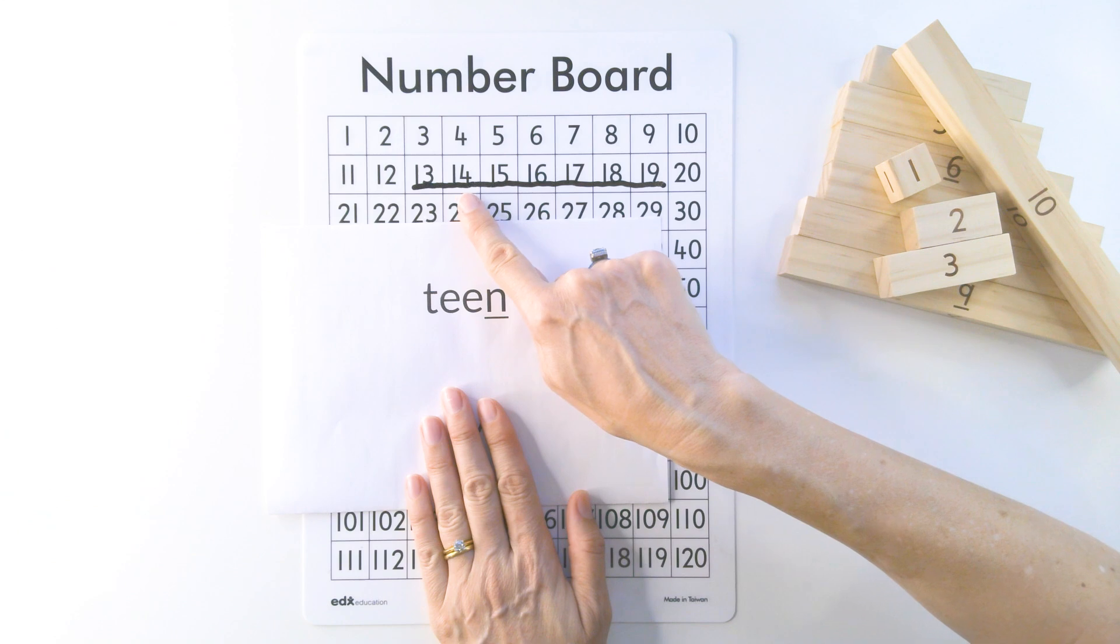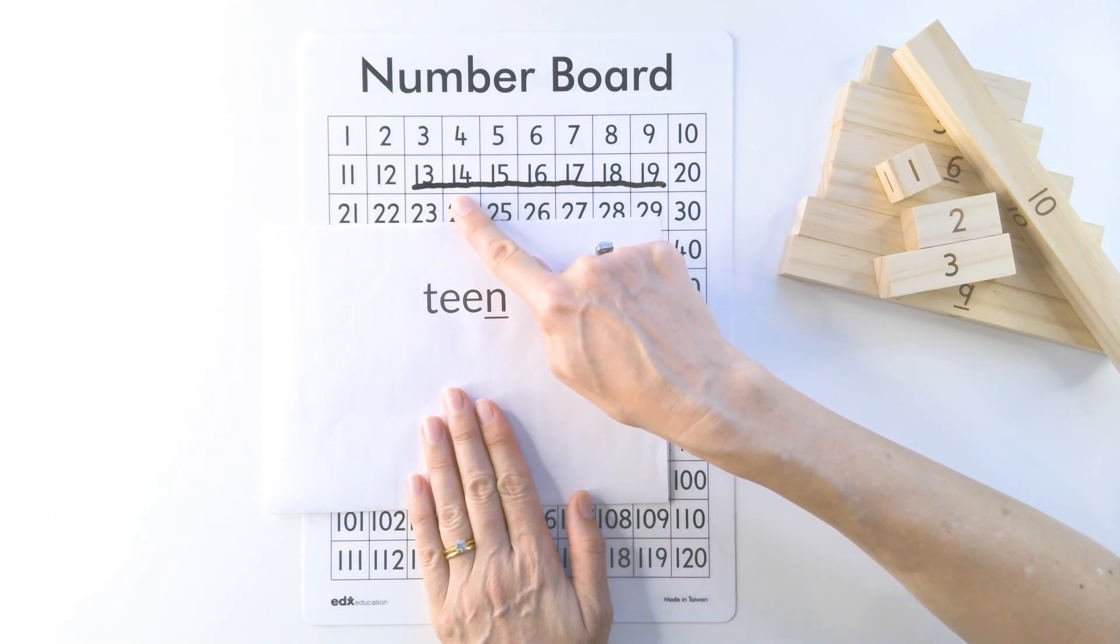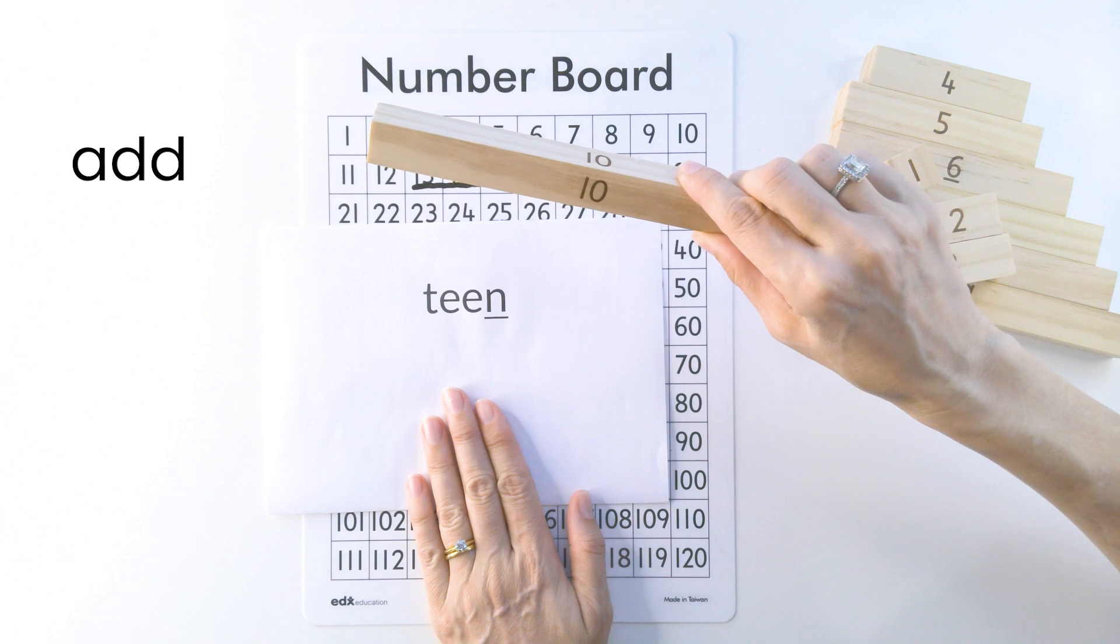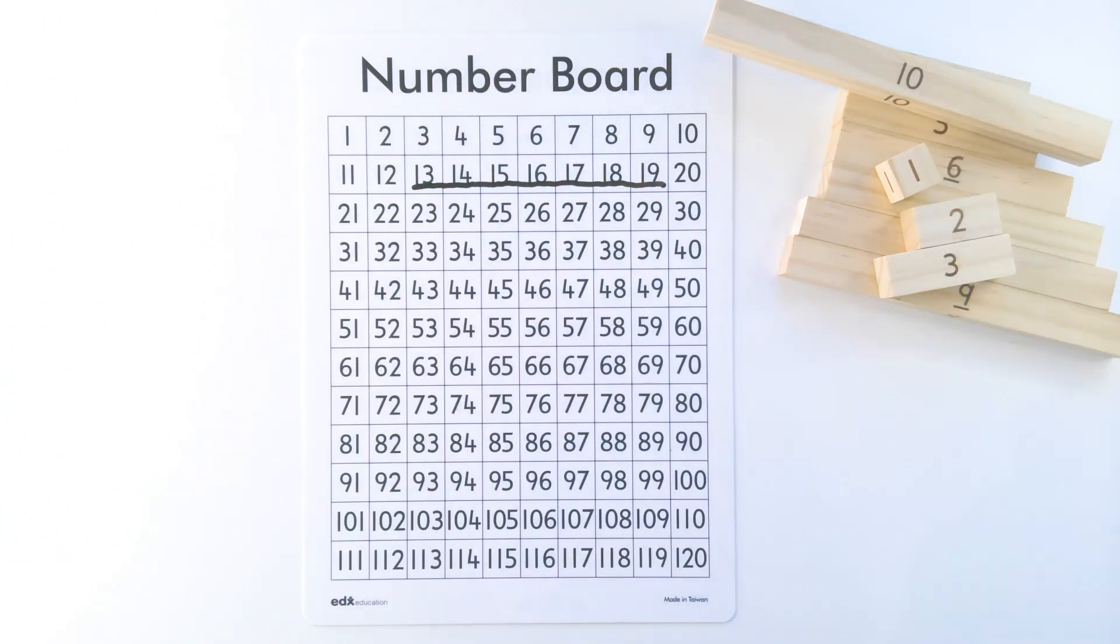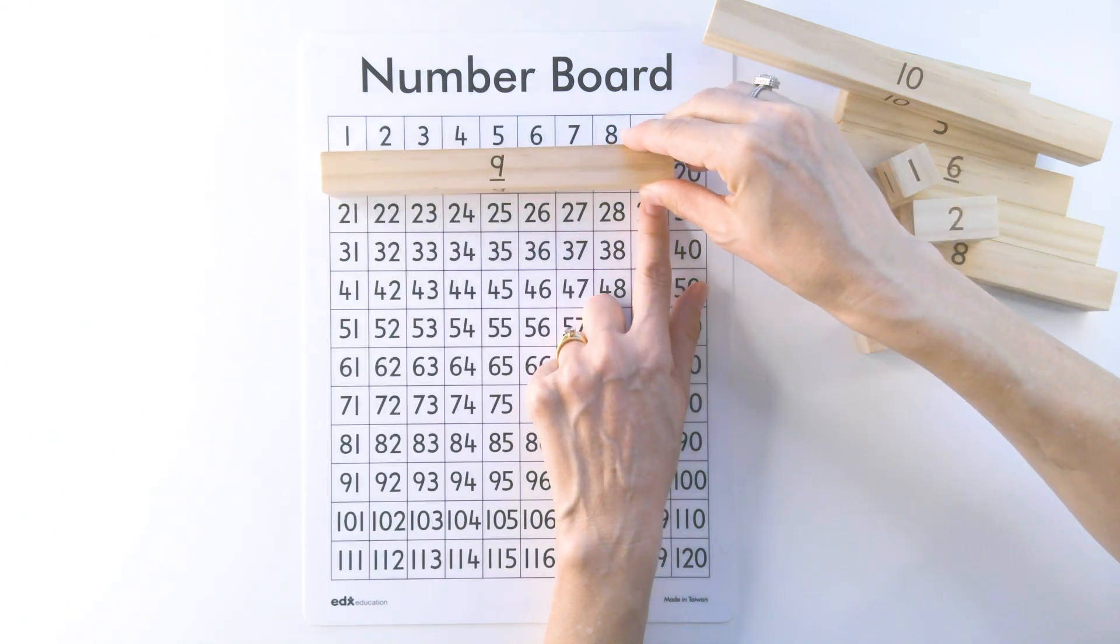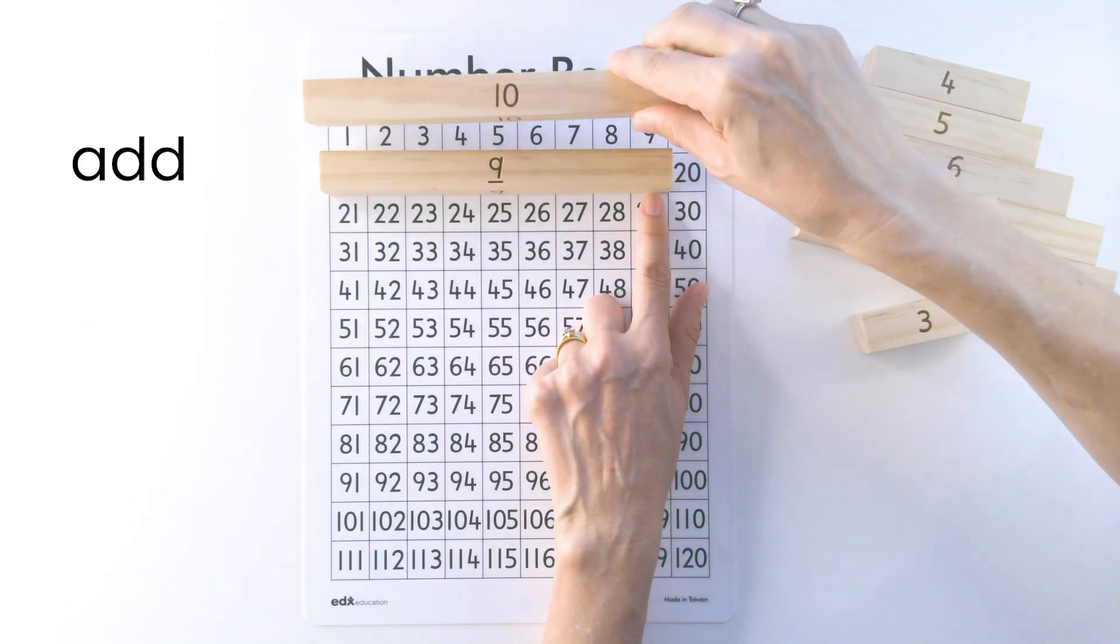So these are our teen numbers. Teen means to add one 10. I'm going to start with the 9 and say the number 19. And that means 9 add 10.